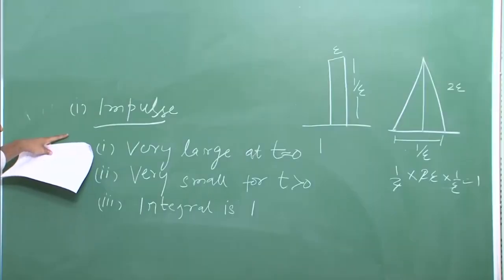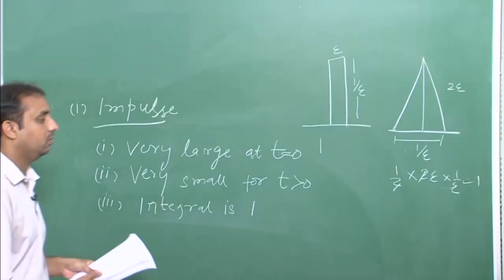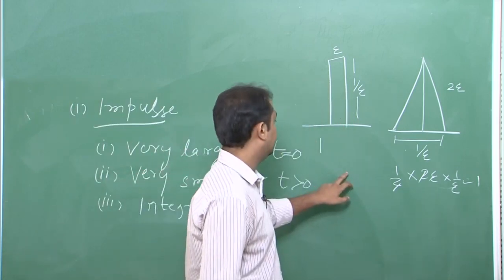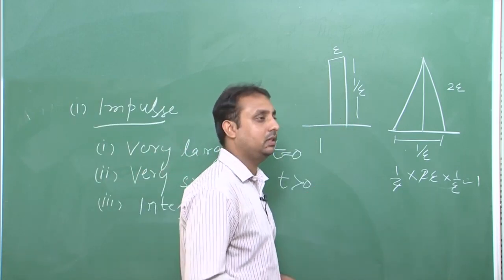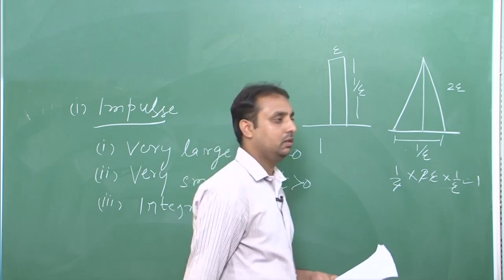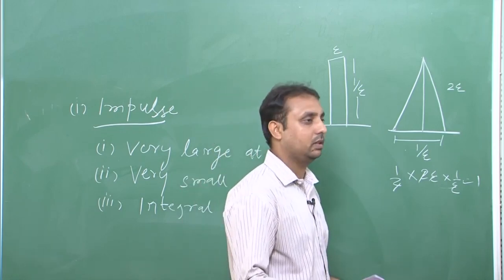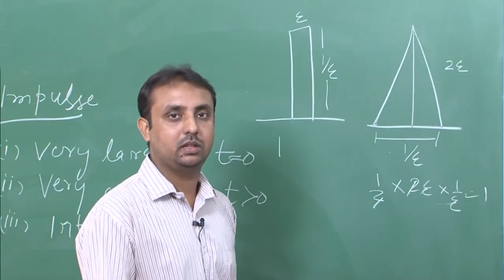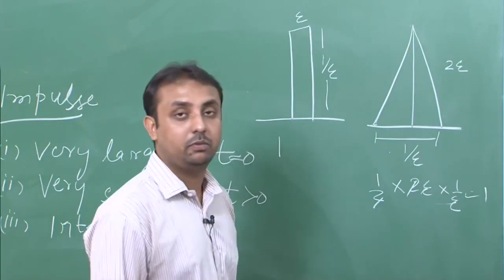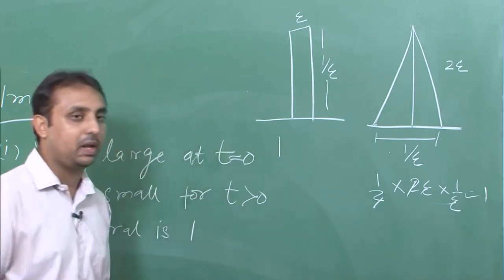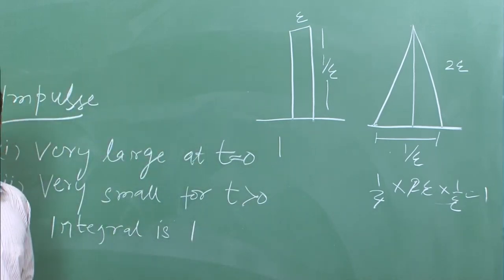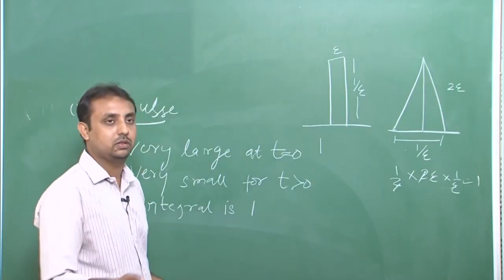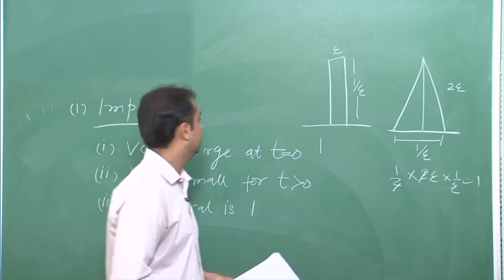We have seen the impulse signal. Physically, you can observe an impulse signal during a collision or when an object hits something. For example, when you hit a nail with a hammer, the force is known as an impulse. Even for a spring-mass system, if you apply a force for a very short duration, the response of that system will be due to impulse — that response is called the impulse response.